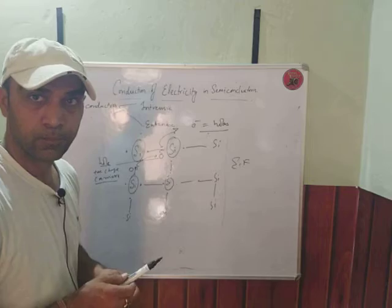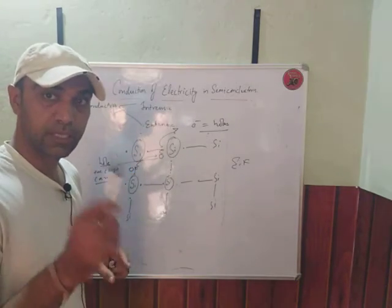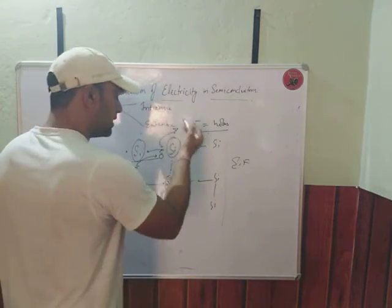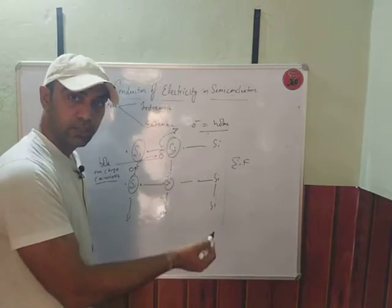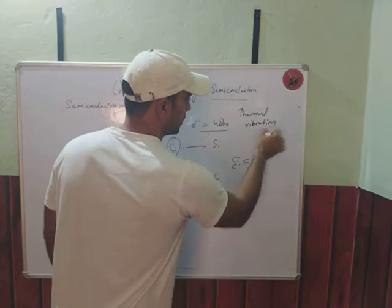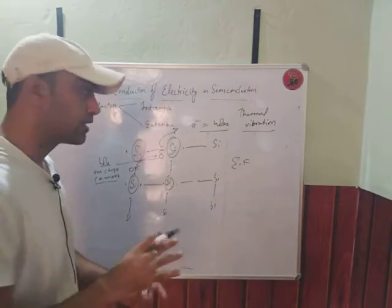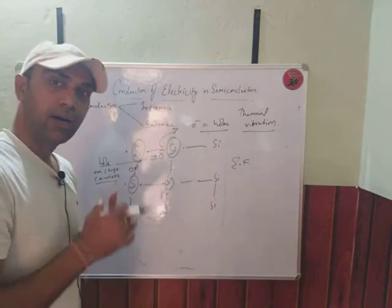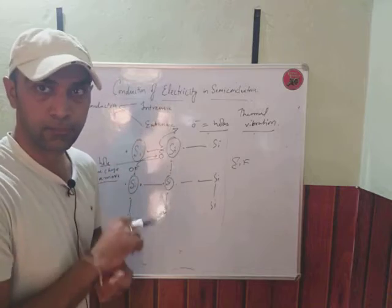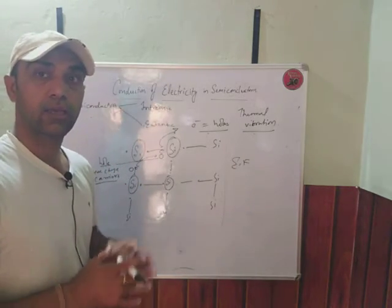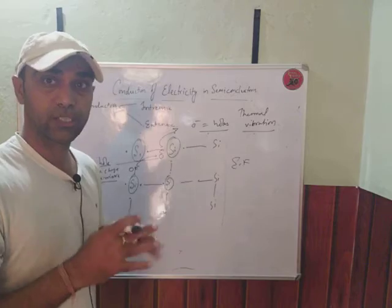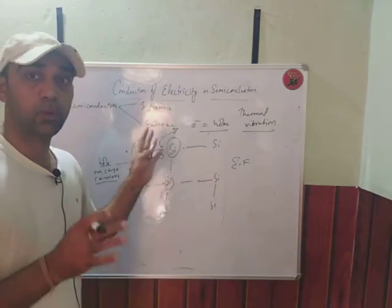The electrons are generated by the application of heat energy. This process is known as thermal vibration — thermal stands for heat. From thermal vibration, electrons are displaced from their sites and holes are generated. Holes and electrons are generated in this way and they start conducting electric current. At normal temperature conductivity is very low, so this conduction occurs mainly at elevated temperatures. This completes the description of the intrinsic pure semiconductor crystal.